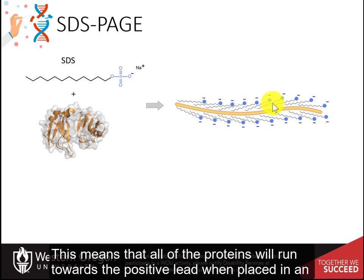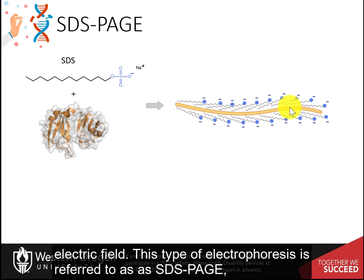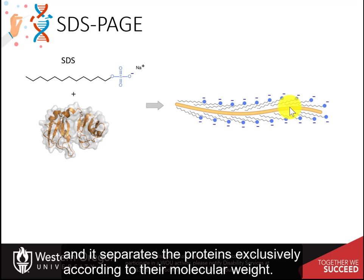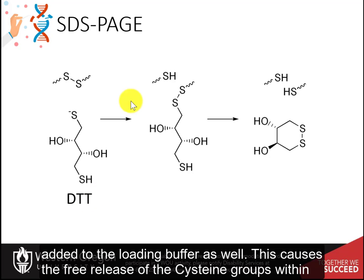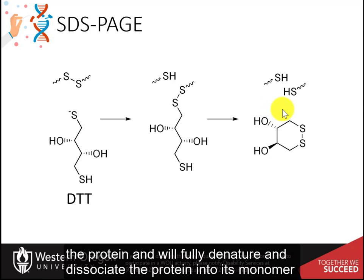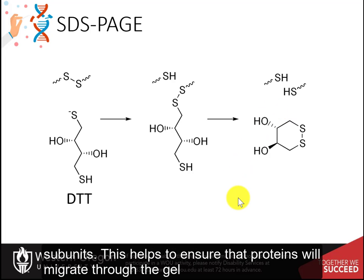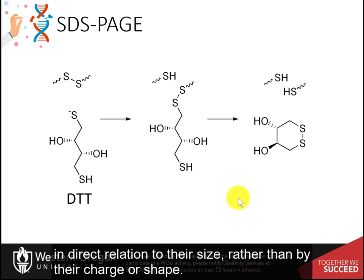This means that all proteins will run towards the positive lead when placed in an electric field. This type of electrophoresis is referred to as SDS-PAGE, and it separates proteins exclusively according to their molecular weight. A reducing agent that breaks disulfide bonds, such as dithiothreitol (DTT) shown here, is often added to the loading buffer as well. This causes the free release of cysteine groups within the protein and will fully denature and dissociate the protein into its monomer subunits, helping to ensure that proteins migrate through the gel in direct relation to their size rather than by their charge or shape.